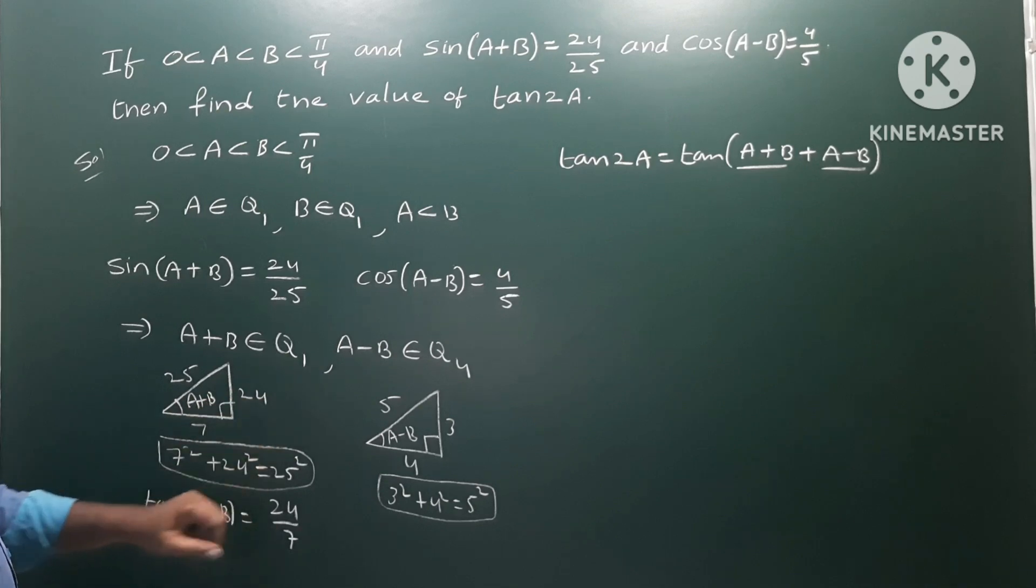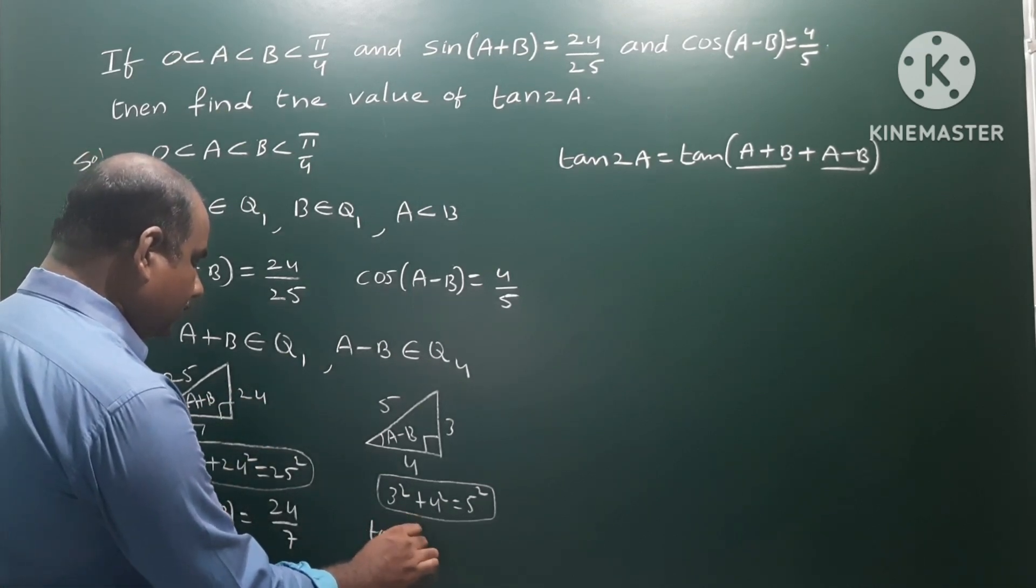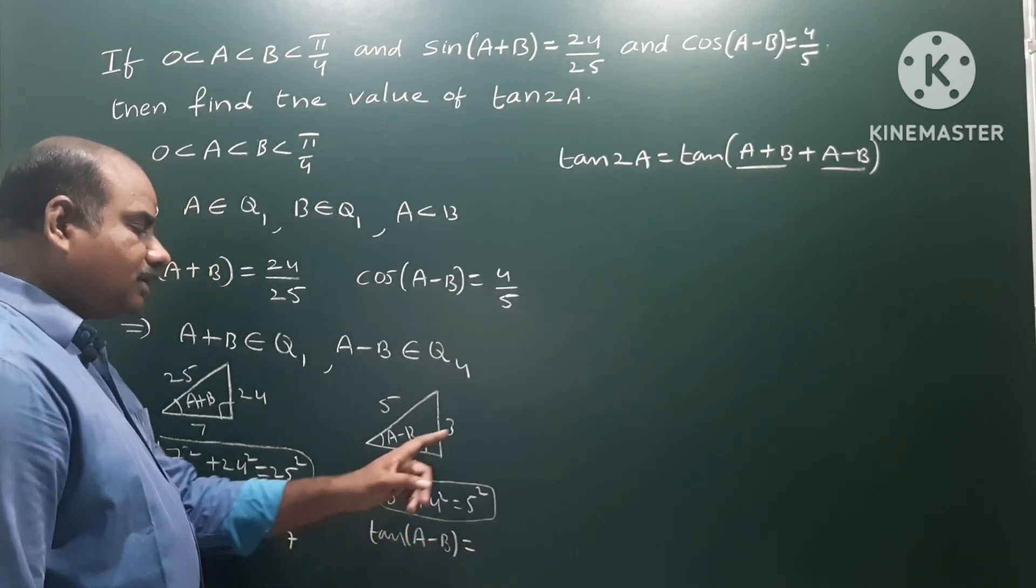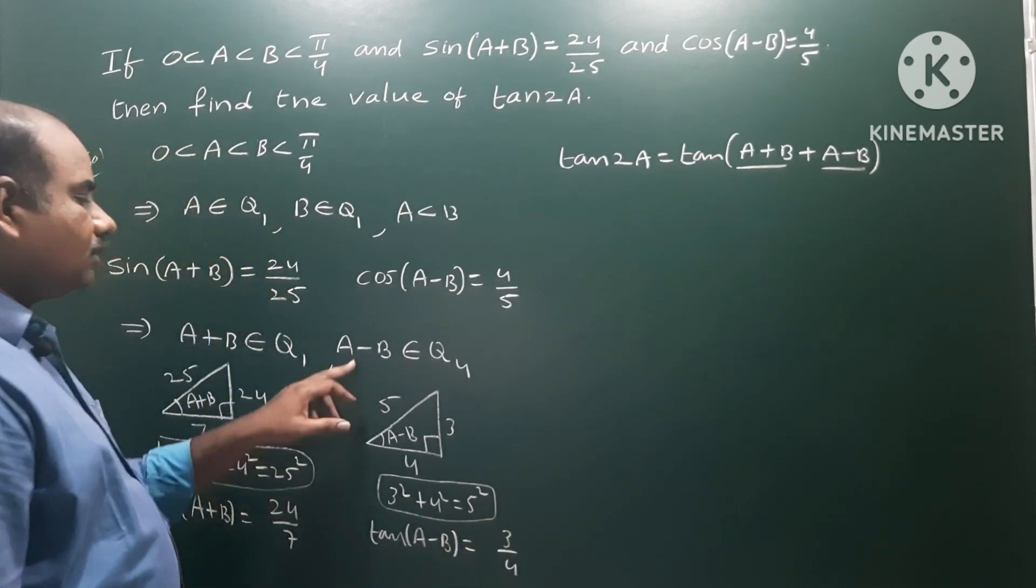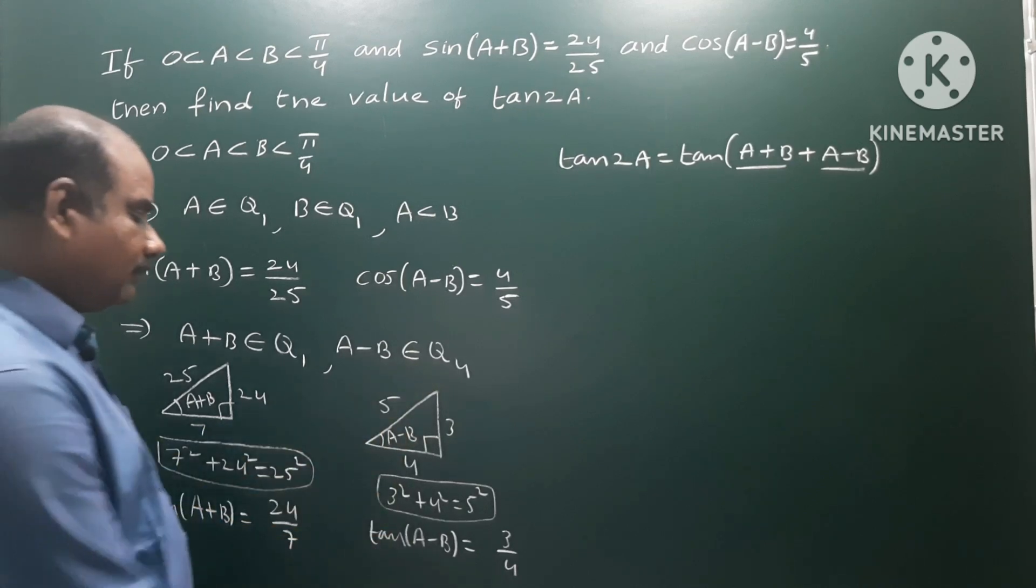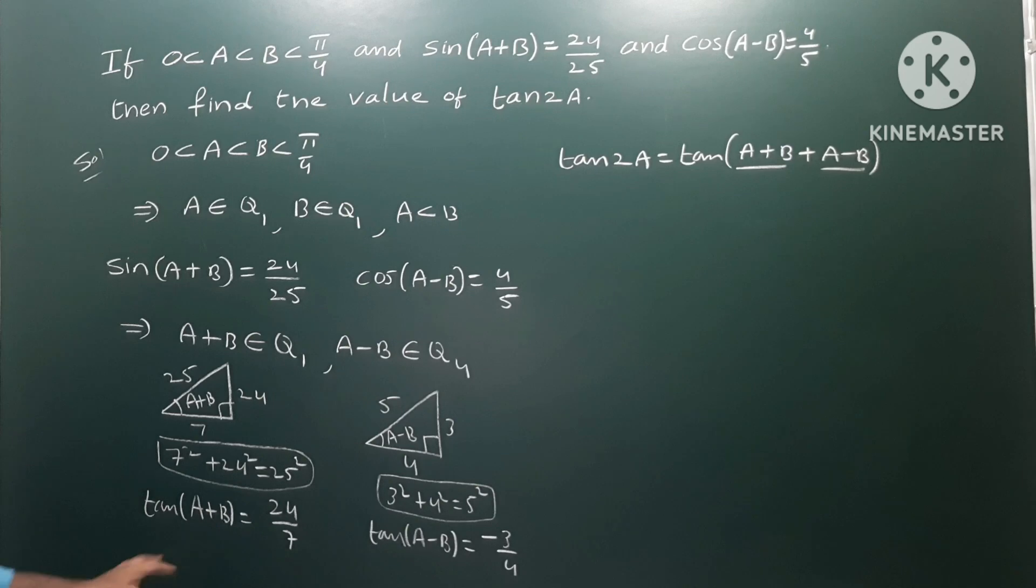For tan(A-B), opposite by adjacent is 3/4. But we know A-B belongs to the fourth quadrant, where tan is negative. So tan(A-B) = -3/4. These are the values of tan(A+B) and tan(A-B).